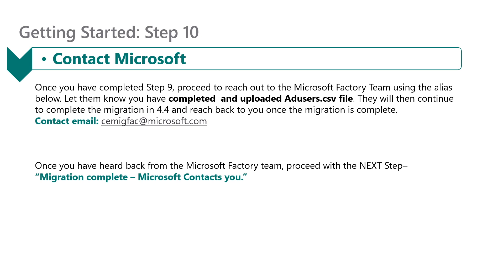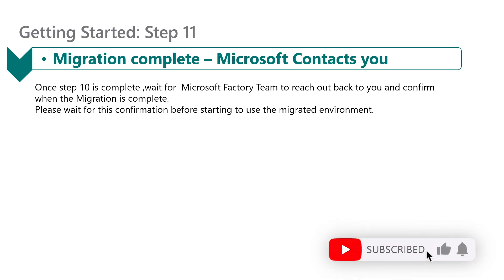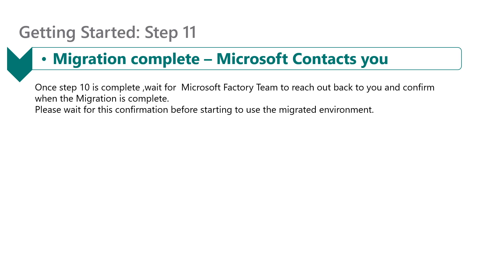Once you've completed the upload of the ad_users.csv file, reach out to the Microsoft factory team and let them know you've completed and uploaded the file, using the provided email address. Now that you've completed this step, the Microsoft factory team will proceed with the migration. Once they've completed the migration, they will reach out to you. Please wait for the confirmation before starting to use the migrated environment.